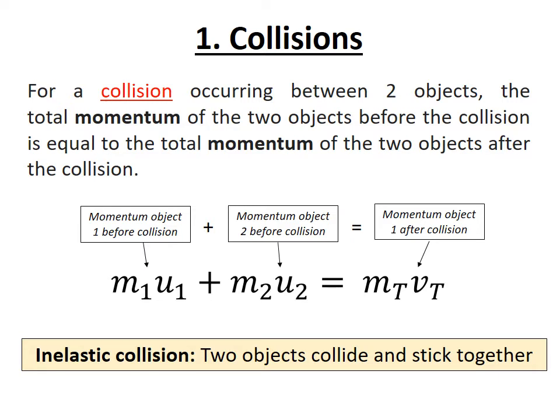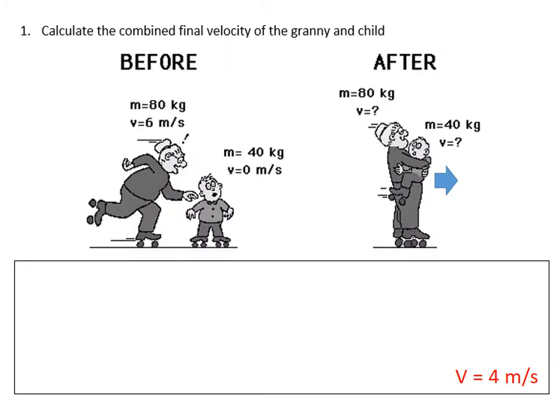So this example shows granny and her grandson roller skating. It's a slightly silly example, but we're going to look at the momentum before and the momentum after. Now you'll notice that granny is skating along and her little grandson is not moving to start with. She then skates along, scoops him up, and they move off together. So this is an inelastic collision.